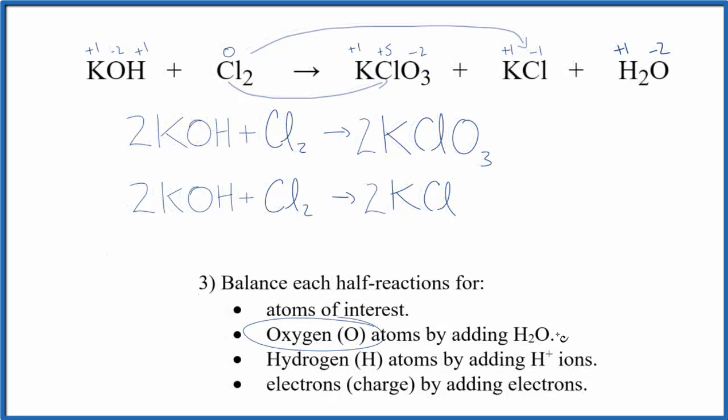So now we're going to balance the oxygen atoms by adding water molecules. Here I have two times three. That's six. Over here I only have two. So I need to add four water molecules. So now I have the same number of oxygen atoms on each side. Down here I have two oxygen. Let's add two water molecules.